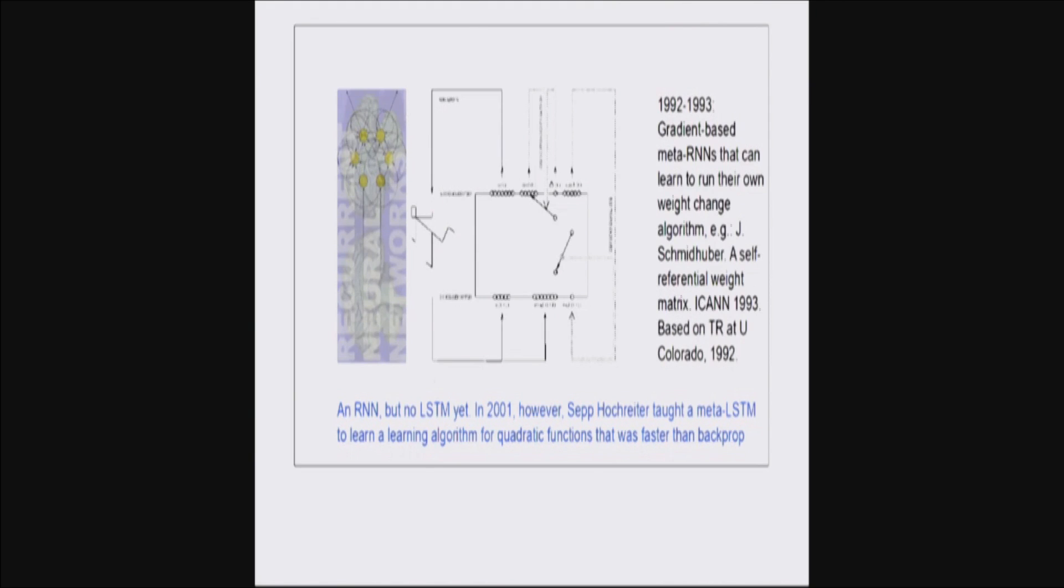Now, back then, not done with LSTM, but with standard INNs, but just a couple of years later, in 2001, maybe he didn't have a fully self-referential system, but he showed at least that one network can learn a learning algorithm on another recurrent network. So, it was an LSTM, actually, which learned to solve quadratic functions through a new learning algorithm, self-invented learning algorithm, 30 times faster than Backprop, which was the technique that was used to train the whole system. So, things like that are possible.